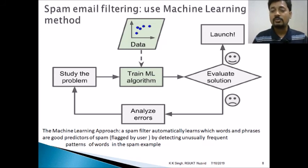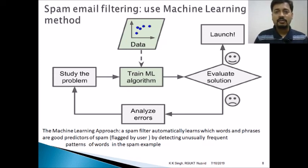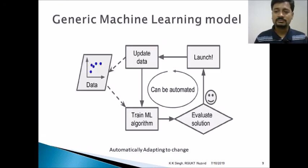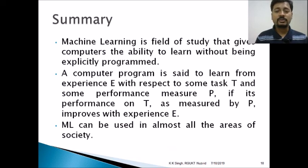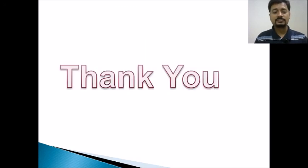This model is more reliable, and in future, if new data comes with new keywords and patterns, the model can be retrained or improve itself. As new data arrives, the model keeps updating and does not need much human intervention. In summary, machine learning is a field of study that gives computers the ability to learn without being explicitly programmed, and it can be used in almost all areas of life. Thank you.